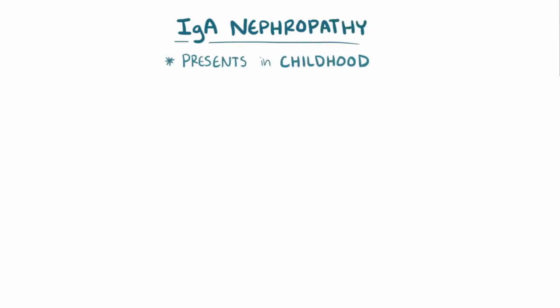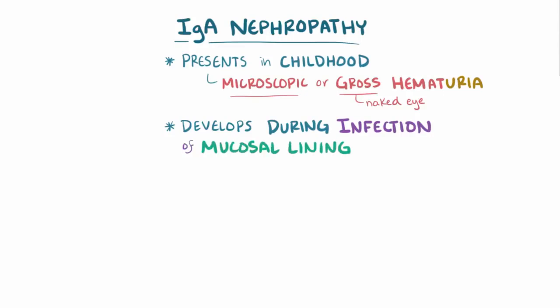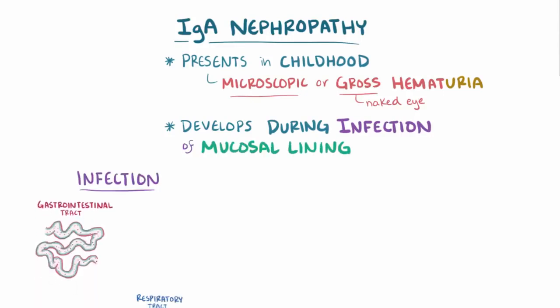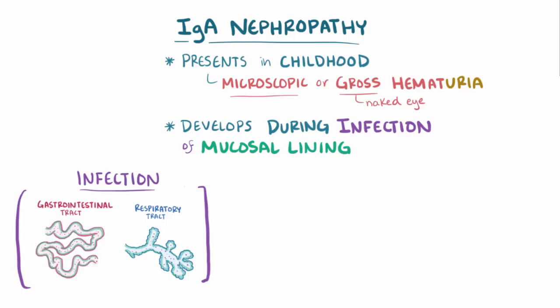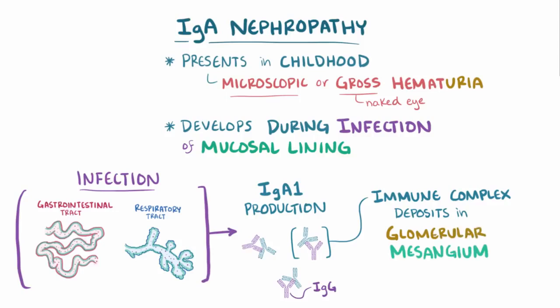Typically, IgA nephropathy presents in childhood as either microscopic or gross hematuria — meaning seen under a microscope or with the naked eye — and it typically develops during an infection involving the mucosal lining, like infections of the gastrointestinal or respiratory tract. In these sorts of infections, IgA1 antibody production gets ramped up, leading to antiglycan IgG formation and immune-complex deposition in the glomerular mesangium, causing inflammation.